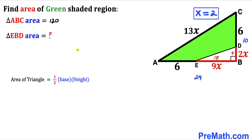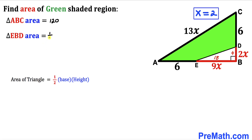Next, we calculate the area of the smaller right triangle EBD using the same formula. The base is 18 and the height is 4, so the area = ½ × 18 × 4 = 36 square units.